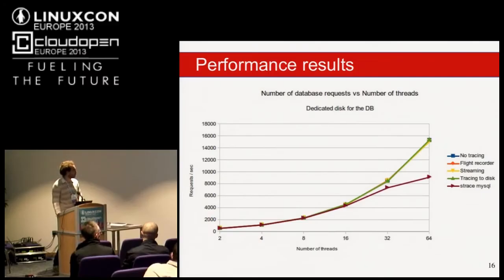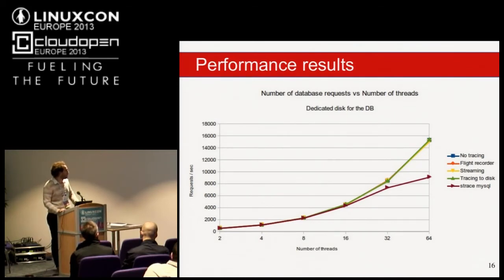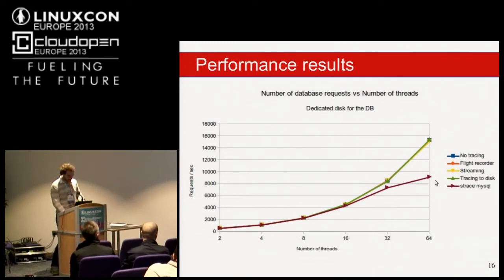The results are easy to interpret. With no tracing, flight recorder, streaming, and dedicated-disk configurations of LTTng, the curves essentially overlap — no overhead compared to baseline. At 64 threads we have around 15,000 requests per second even with tracing activated. Compare that to strace tracing only MySQL, which gets around 9,000 requests per second.